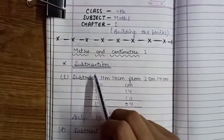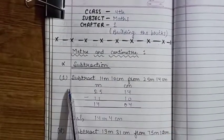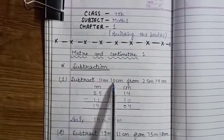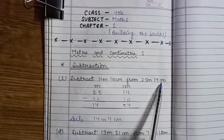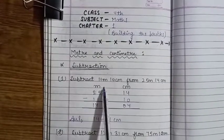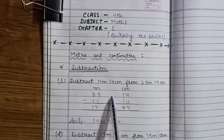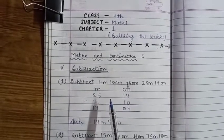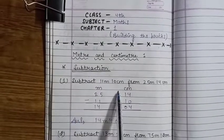The first question is subtract 11 meter 10 centimeter from 25 meter 14 centimeter. Students, subtraction karte samay aapko hamesha yaad rakhna chahiye ki aapki jo larger digit hoti hai woh upar aati hai aur jo small digit hoti hai woh niche ki taraf aati hai.